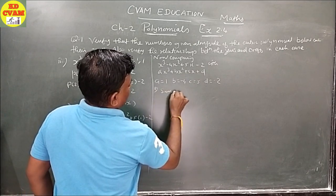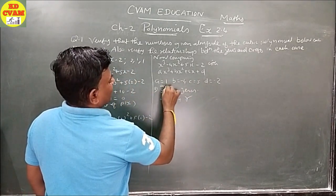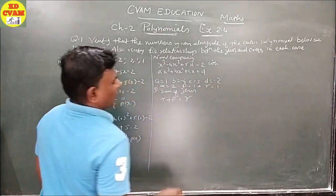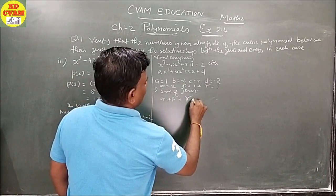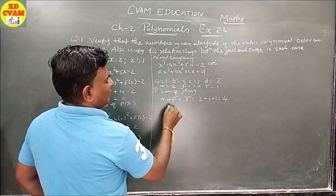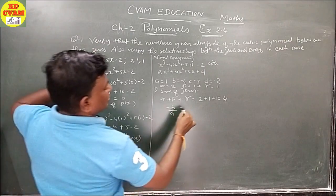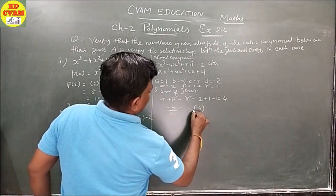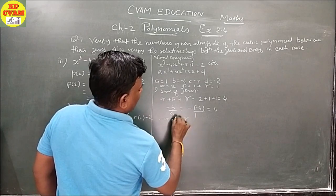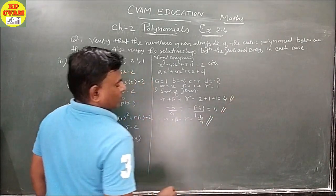Sum of zeros: alpha + beta + gamma = 2 + 1 + 1 = 4. As per the formula, -B/A = -(-4)/1 = 4. Therefore alpha + beta + gamma = -B/A is verified.